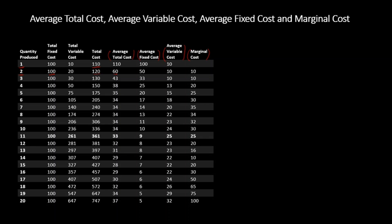Average variable cost equals total variable cost divided by the quantity produced. So 30 divided by 3 gives an average variable cost of 10. Marginal cost is the incremental total cost with every unit increase in production. For example, 120 minus 110 gives a marginal cost of 10. Likewise, 175 minus 150 gives a marginal cost of 25.